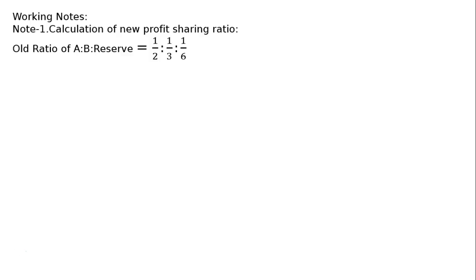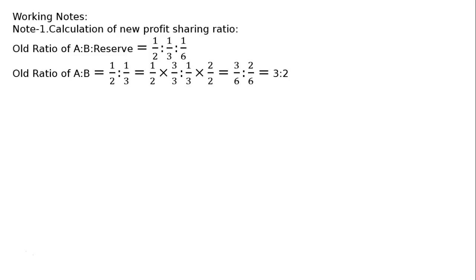Old ratio of A to B to reserve is equal to 1.5 : 1.3 : 1.6. The old ratio of A to B is 1.5 : 1.3, which equals 1.5×3/3 : 1/3×2/2, that is equal to 3/3. We solved this. So old ratio of A to B is 3 : 2.